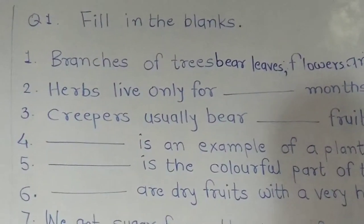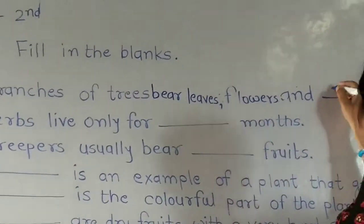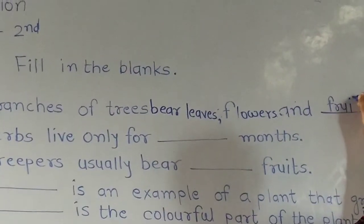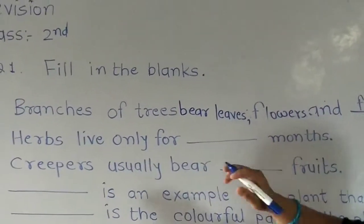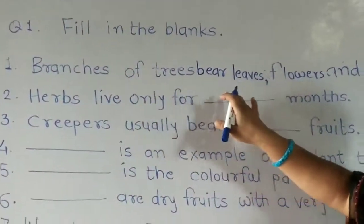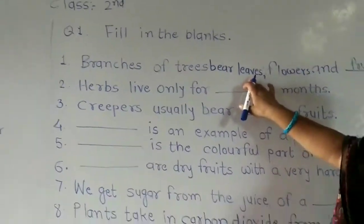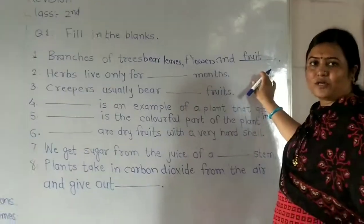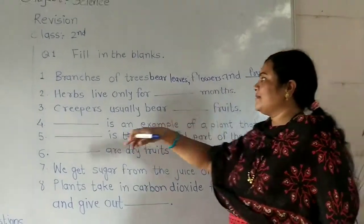Now let's look at the answers. For the first question about the parts of a plant — the leaves, flowers, and fruit — the answer is fruit.